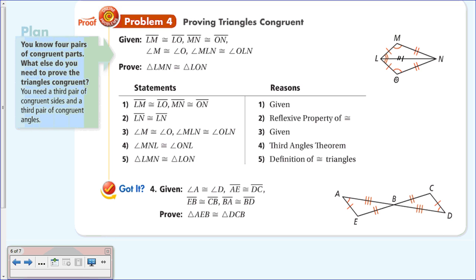Angle MLN is congruent to angle OLN—given. Then angle MNL is congruent to angle ONL by the Third Angles Theorem: if two angles are congruent, the third ones must be as well. We've now proven all three sides and all three angles congruent, so by the definition of congruent triangles, triangle LMN is congruent to triangle LON—listed in the same corresponding order.